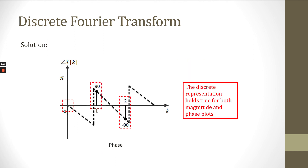The next sketch is the phase for the discrete Fourier transform signal X[k]. For k=0, we have 0 degrees. For k=1, we have 90 degrees. For k=2, we have negative 90 degrees. This is the DFT phase sketch, where the discrete representation holds true for both magnitude and phase plots for k equal to 0 through 2.